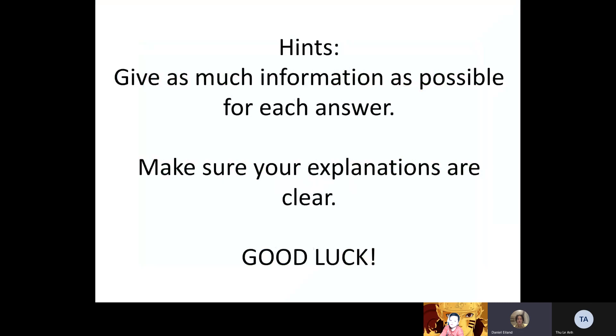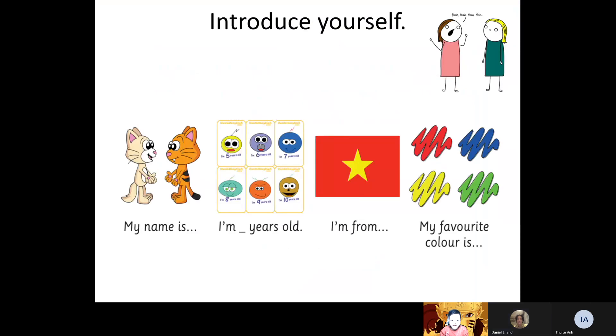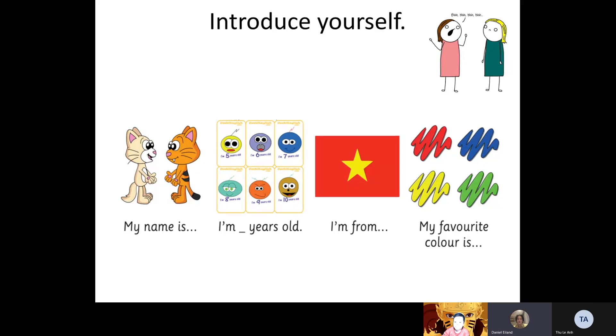Say as much as you can, give as much information as possible, and be clear when you speak. Speak clearly and good luck. So can you introduce yourself please? Hello, my name is Hoàng Phúc. I'm 10 years old. I'm from Vietnam. My favorite color is red. And what city do you live in? I live in Hanoi. Okay, and how do you feel today? I feel happy. Why do you feel happy? Because today I play football with my father. Very good. And what else did you do today? Yes, I play the game.